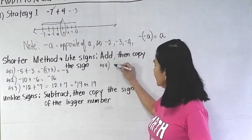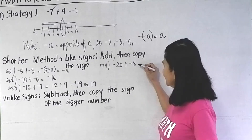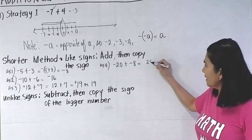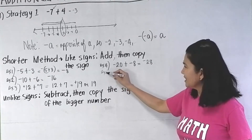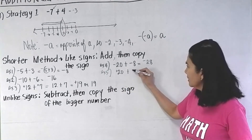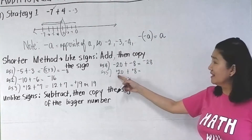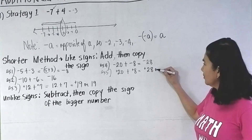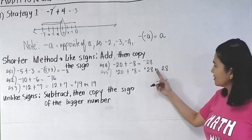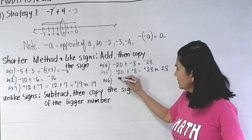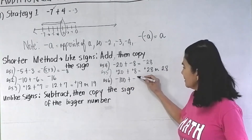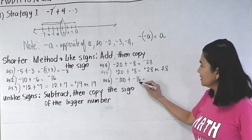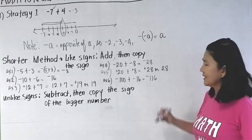What if we have negative 20 plus negative 8? These are like signs. Add 20 plus 8 is 28, then copy the sign — so the answer is negative 28. Another example: negative 100 plus negative 16. Do you have like signs here? Yes, they are both negative. So add 100 plus 16, which is 116, then copy the sign — negative 116.